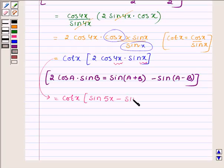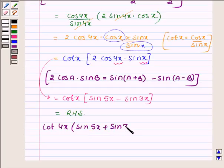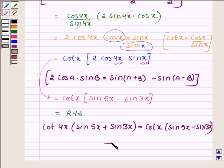Which is nothing but the right hand side of the given problem, and hence we can say that cot 4x into sin 5x plus sin 3x is equal to cot x into sin 5x minus sin 3x, hence proved. So this completes the session, hope you enjoyed it, take care and have a good day.